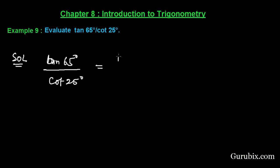We can write this tan 65 degree like this: 90 minus 25 degree. And here we have cot 25 degree.